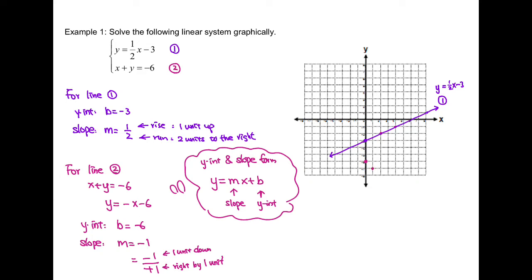And if you use the slope to find another point again — one unit down, one unit to the right — you will get (2, -8). By connecting those three points, you will get line 2. Remember to label line 2 with the equation. Then we have to find where they intersect, which is at (-2, -4). Therefore, the solution is at (-2, -4).